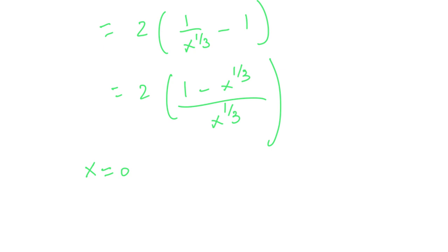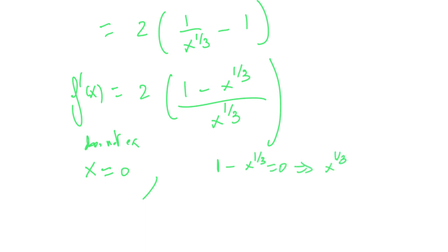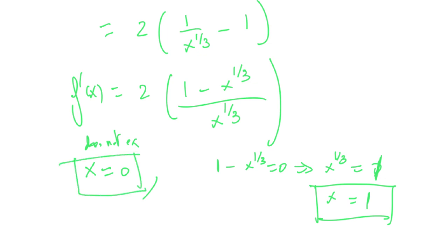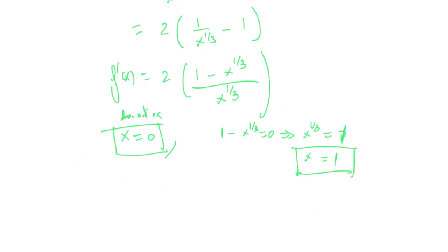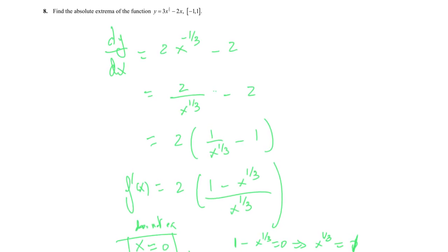The other critical point is where the derivative equals zero. Setting 1 minus x to the 1/3 equal to zero gives x to the 1/3 equals 1, so x equals 1. Both x equals 0 and x equals 1 are critical points inside [minus 1, 1]. We now evaluate the function at these critical points and at the endpoints.